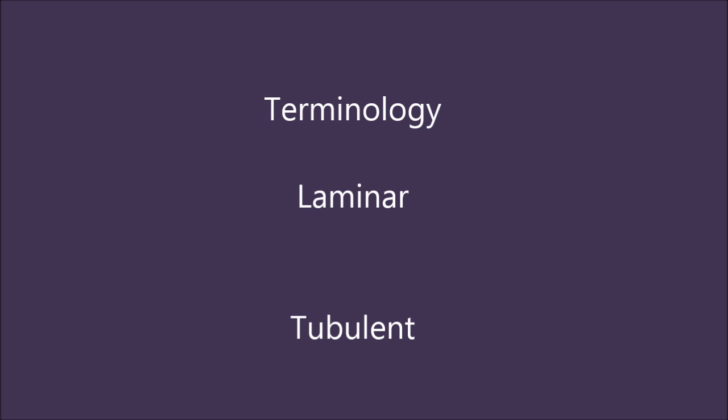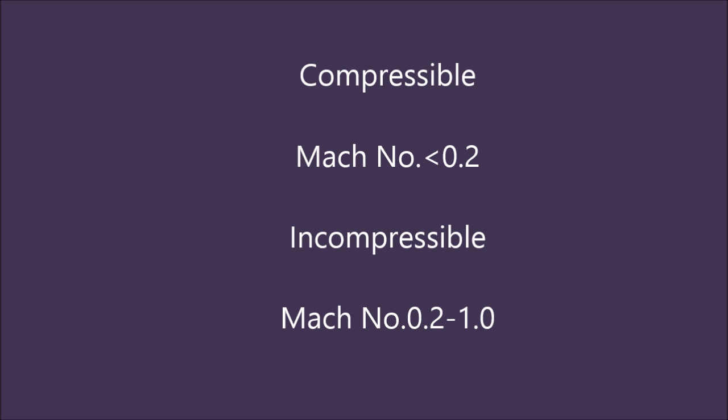Next is compressible and incompressible. Compressible means density is not constant, and incompressible means density is constant. It's also expressed in terms of Mach number. Here I have shown the range.